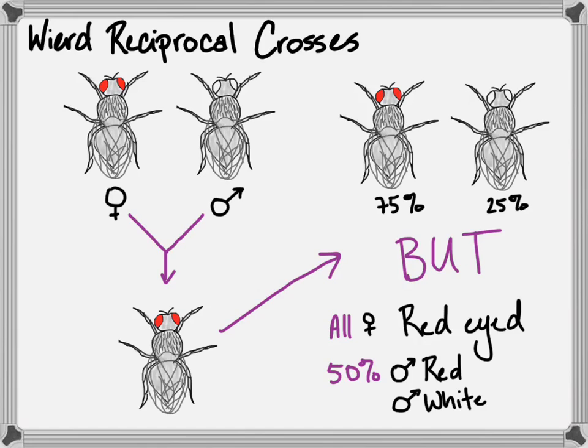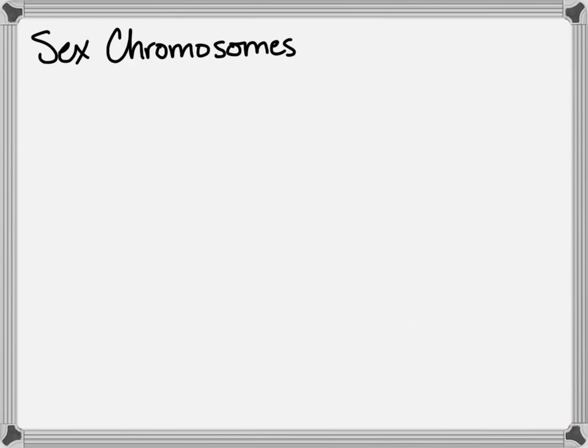Only the males were inheriting white eyes. So that 3 to 1 ratio from Gregor Mendel was still kind of holding true, but there was something else at play here. And we now know that that's because of the sex chromosomes X and Y.